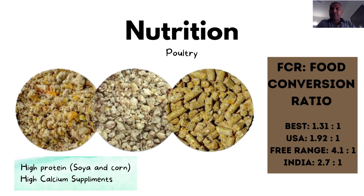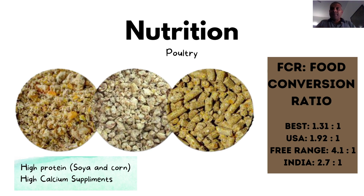Nutrition is a big part of poultry farming. Whether raising for eggs or for meat, the main requirement is protein - eggs are high in protein and the meat we eat is basically all protein. To provide these chickens with large quantities of protein, chicken feed has a lot of soybean and a lot of corn.